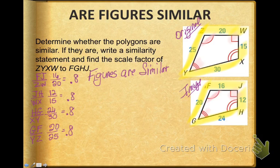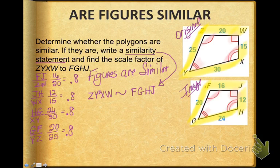The sides must be in proportion, the angles must be congruent. So let's write a similarity statement, and that is polygon ZYXW is similar, notice I used the squiggly, to polygon FGHJ. Notice that I put each corresponding side in the same order.